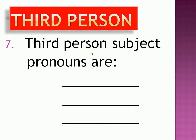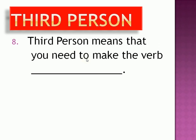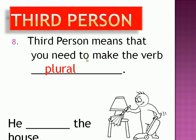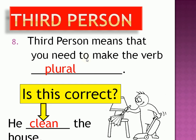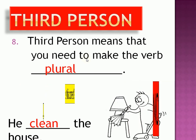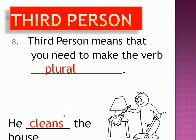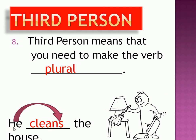We do need to talk about third person subjects. The third person subject pronouns are he, she, and it, and these are important subject pronouns. The third person means that you need to make the verb plural. Let's look at this example: 'He cleaned the house.' Is this correct? Absolutely not. We need to get that little S in there to make it plural. Now it says 'he cleans the house.' Because we have a third person subject, we need to say 'he cleans the house.'